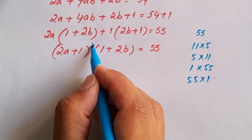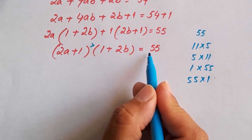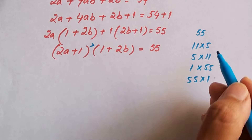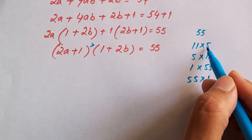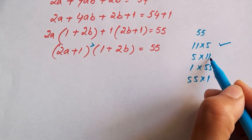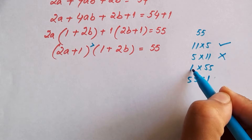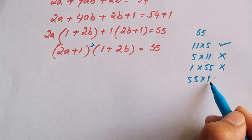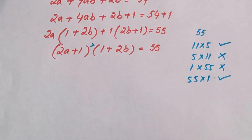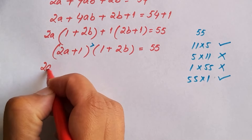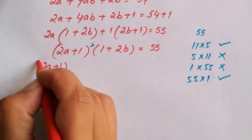Let's see which factor pair fits. Since 2a plus 1 is greater than 1 plus 2b, which pair satisfies this condition? Is 11 greater than 5? Yes. Is 5 greater than 11? No. Is 1 greater than 55? No. Is 55 greater than 1? Yes. So we have two valid factor pairs.